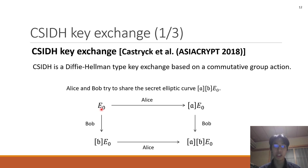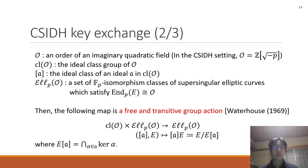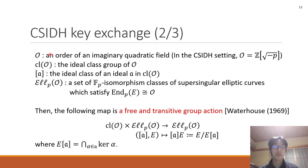Next, I explain what this group action is. Let O be an order of an imaginary quadratic field. In the CSIDH setting, O equals Z[√(-p)]. And let Cl(O) be the ideal class group of O. And let [R] be the ideal class of an ideal R in Cl(O).